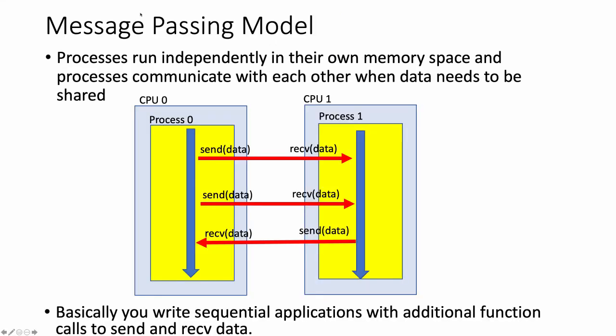So what is the message passing model? The idea in this model is that we have processes that run independently, each in their own address space, i.e. they don't share any memory, and the processes communicate with each other when data needs to be shared. So here I have two processes each running on their own individual CPU. Yellow box is their memory, so they each have their own memory, and basically they run through the computation as shown in blue.